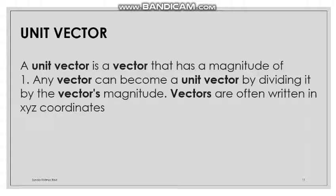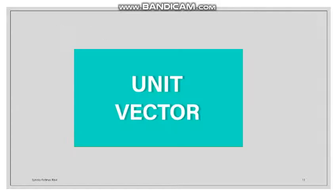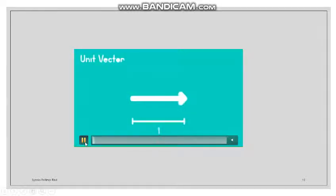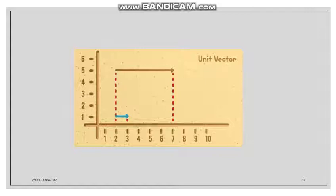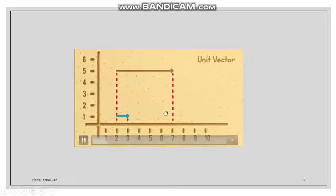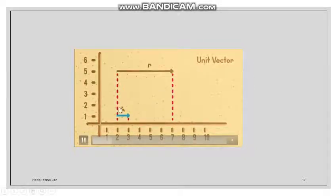Now, unit vector. Unit means unity, which means one. A unit vector is a vector whose magnitude is exactly one. A unit vector shows the direction of a given vector and is parallel to it. We denote unit vectors with arrowheads or a hat notation.